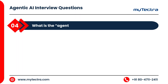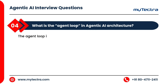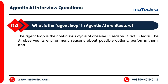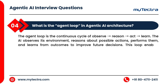What is the agent loop in agentic AI architecture? The agent loop is the continuous cycle of observe, reason, act, learn. The AI observes its environment, reasons about possible actions, performs them, and learns from outcomes to improve future decisions. This loop enables adaptability and autonomy in real-world contexts.